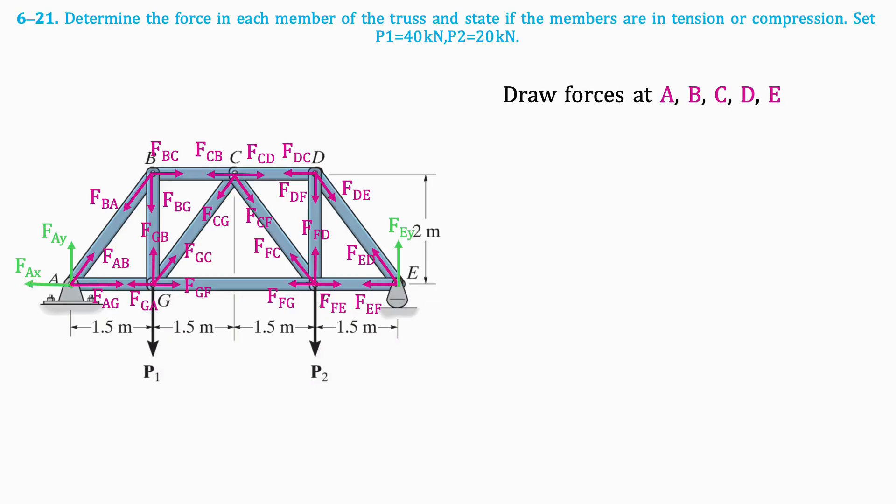We will call tension forces positive. Forces along the members are drawn in pink, and reaction forces are drawn in green. At point E, there is a roller, so there is a reaction force perpendicular to the surface. And at point A, there is a pin, so we will have both X and Y component forces.